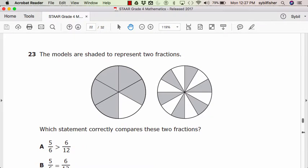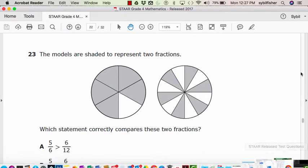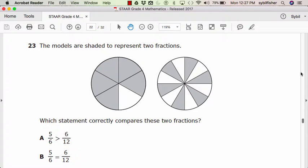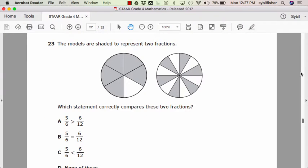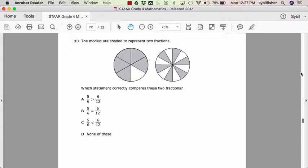Twenty-three. The models are shaded to represent two fractions. Which statement correctly compares these two fractions? A, five-sixths is greater than six-twelfths. B, five-sixths equals six-twelfths. C, five-sixths is less than six-twelfths. Or D, none of these.